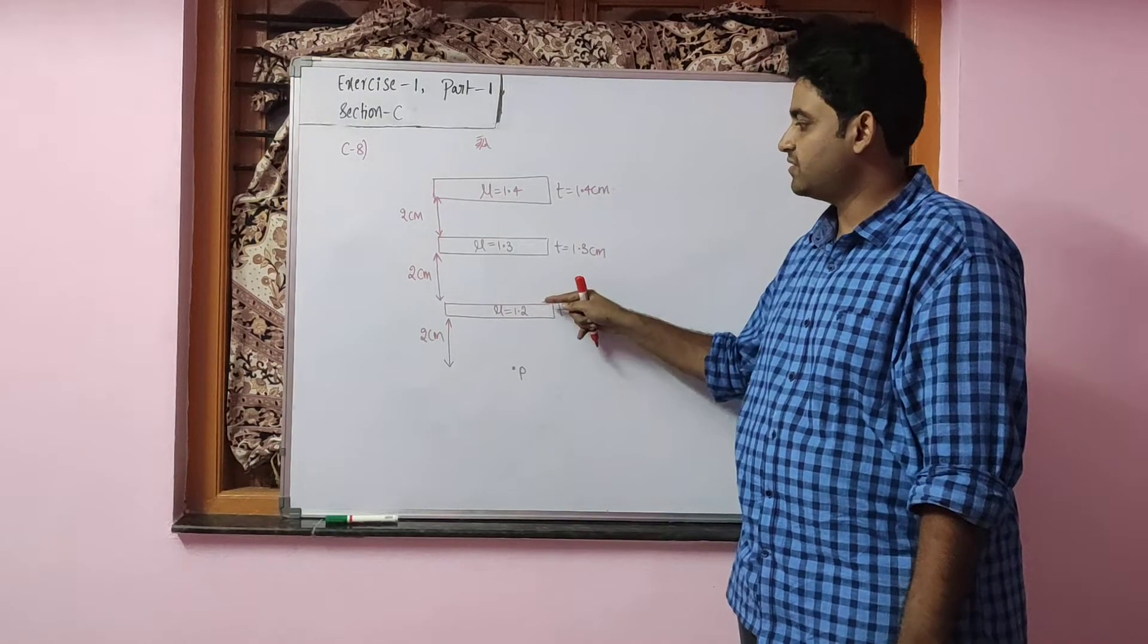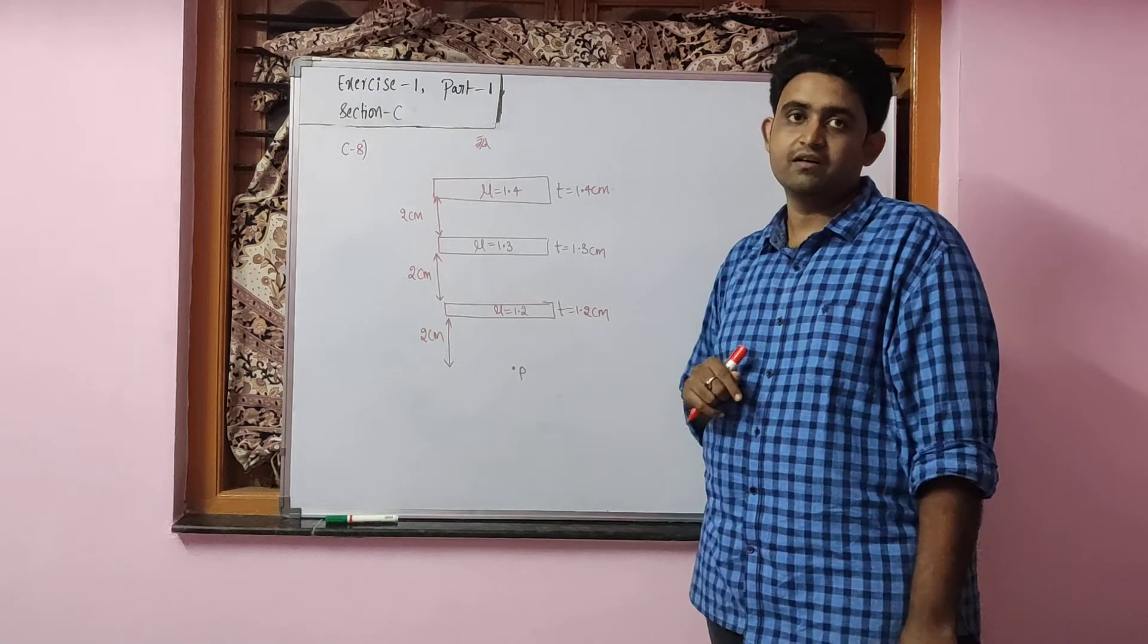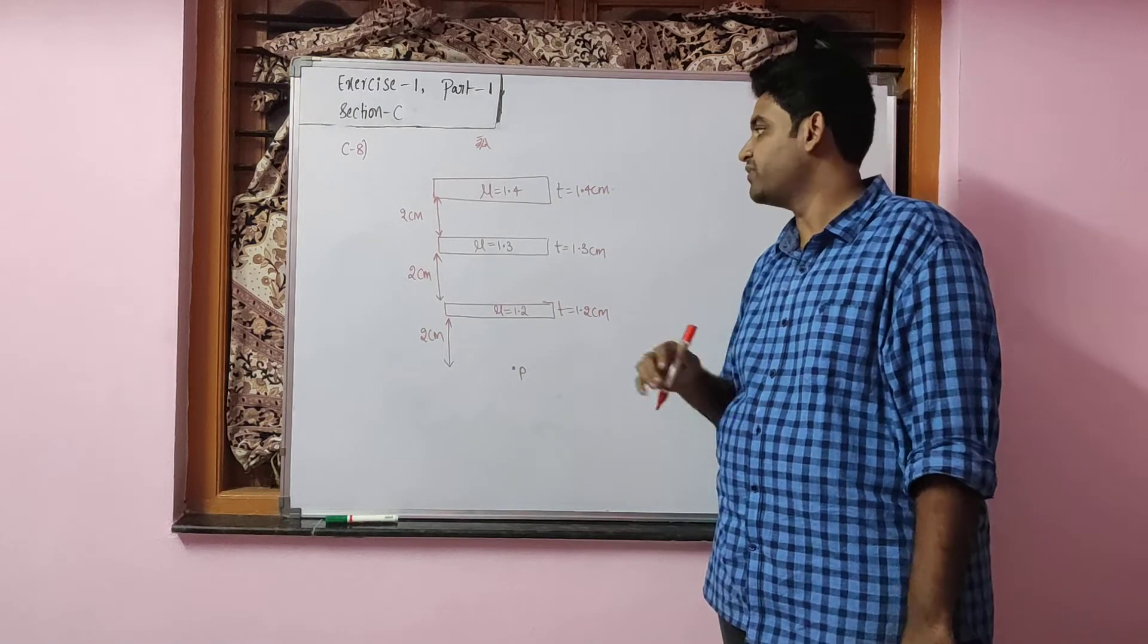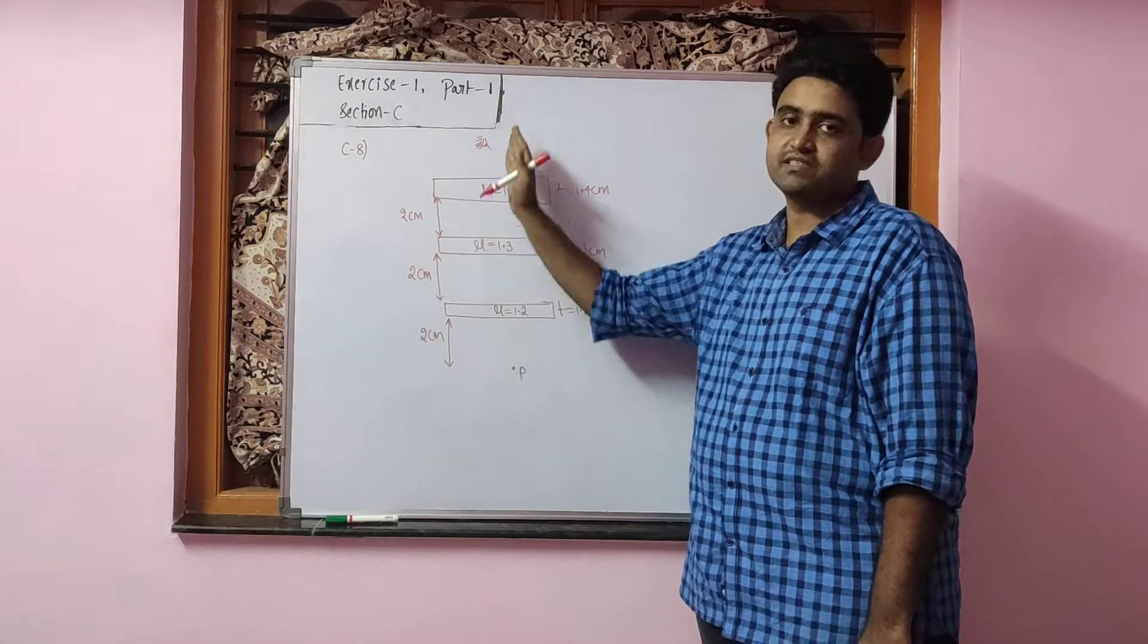You can see here the refractive index of all these three glass slabs is greater than the refractive index of the surrounding. They will try to shift the image in the direction of traveling rays, which is upwards here.